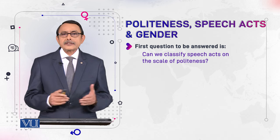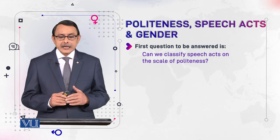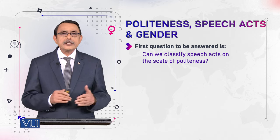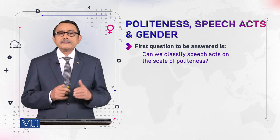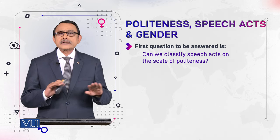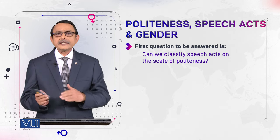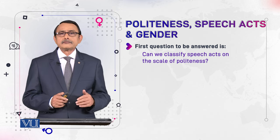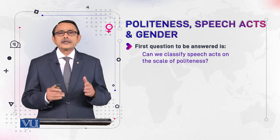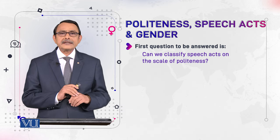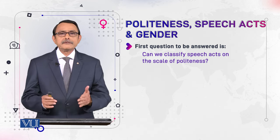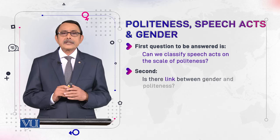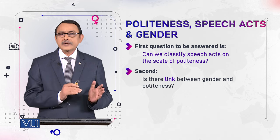The first question to be answered is: can we classify speech acts on the scale of politeness? As we said in the previous module, in pragmatics particularly, politeness is on a scale — it can be on the positive end, it can be on the negative end, it can be absent. Can we say that apology is related with negative politeness and compliments are related with positive politeness? The second question is: is there a link between gender and politeness?